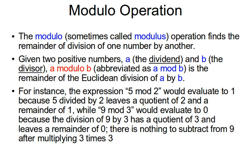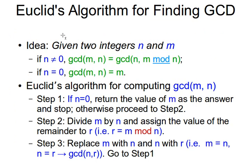Euclidean division is integer division where we have a quotient and a remainder, with no fractions. For instance, 5 mod 2 evaluates to 1, because 5 divided by 2 leaves a quotient of 2 and a remainder of 1 — so 5 = 2 × 2 + 1. Here b=2, q=2, r=1; the remainder is what the modulo operator returns. Likewise, 9 mod 3 gives 0, because 9 = 3 × 3 + 0.